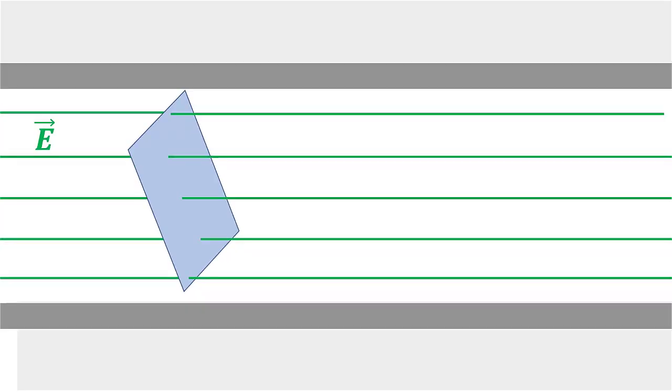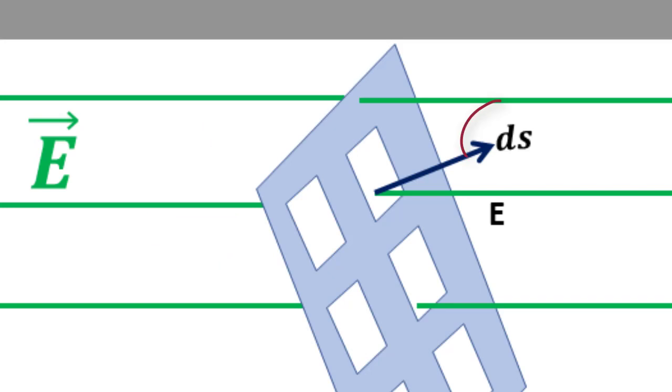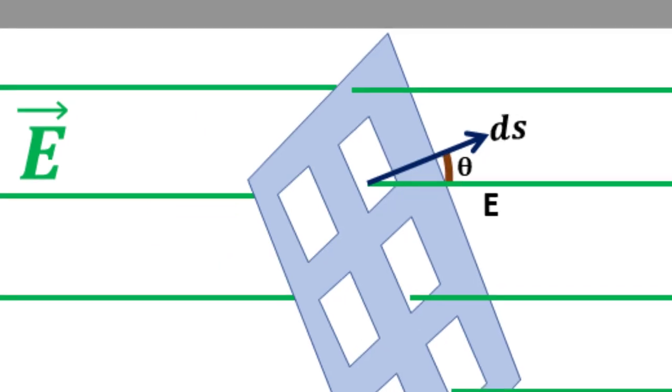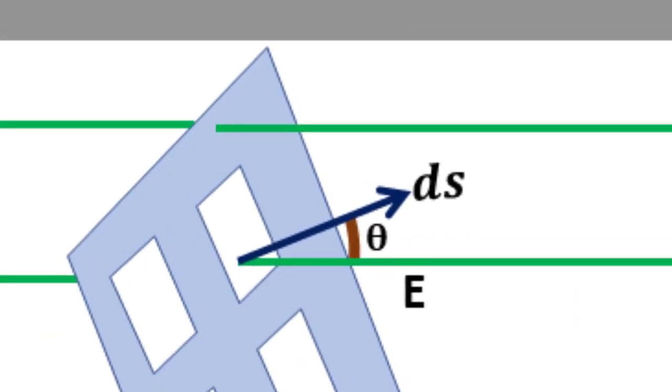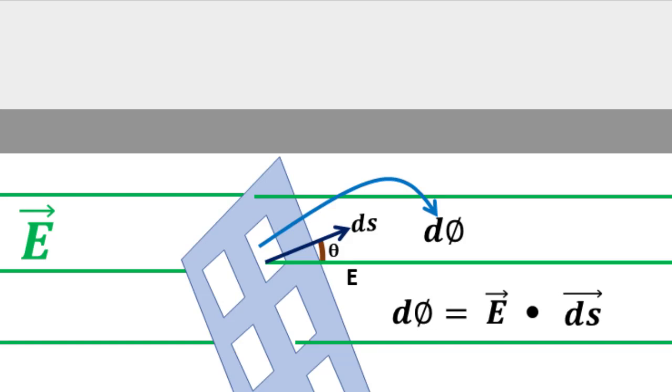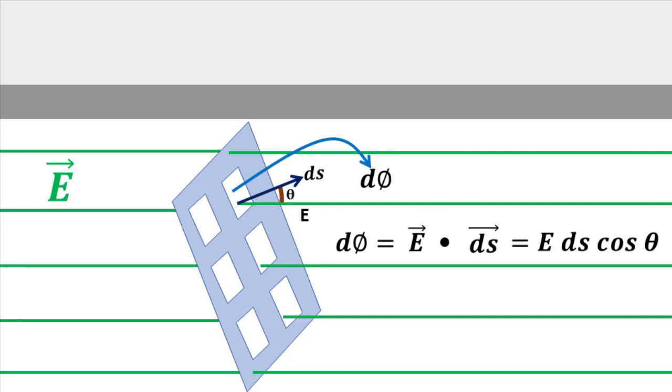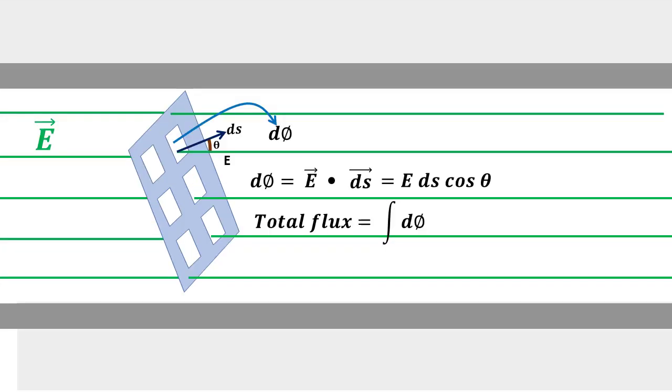Here, these lines are represented by uniform electric field. This rectangle is divided into many small elements. The angle between the area element and the electric field is theta. Then, d phi can be written as vector E dot vector ds. This can be written as E ds cos theta. The total flux will be the integral of d phi. So, flux is a scalar quantity.